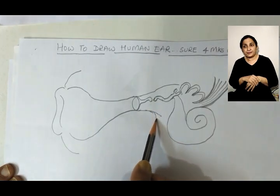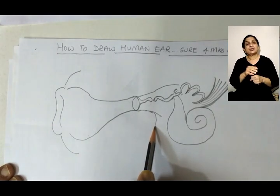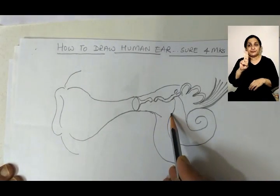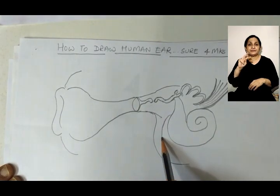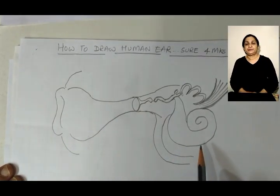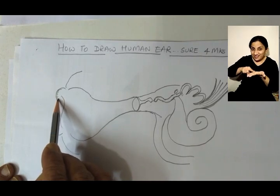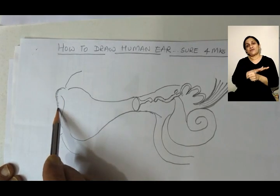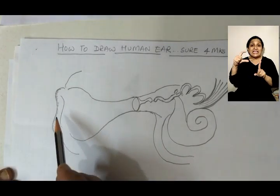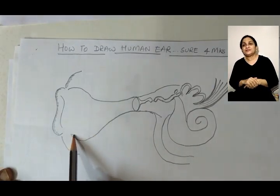This tube which maintains the pressure in the ear is called the Eustachian tube — just take a bend like this. This is the Eustachian tube.